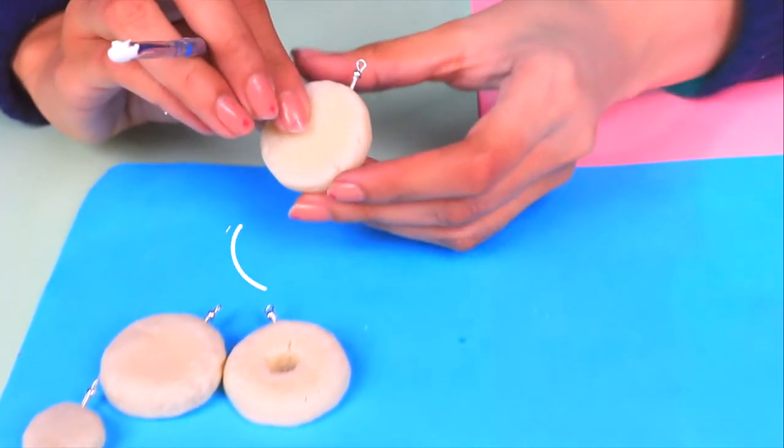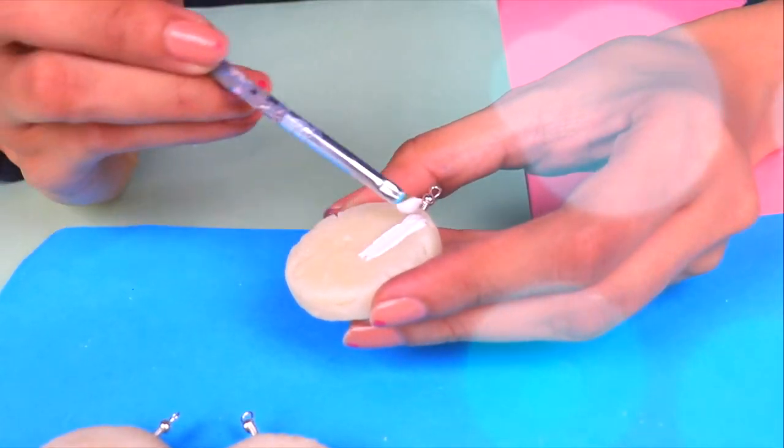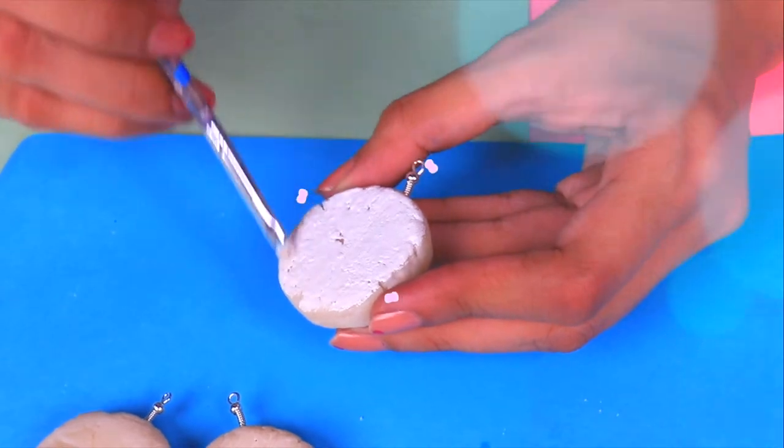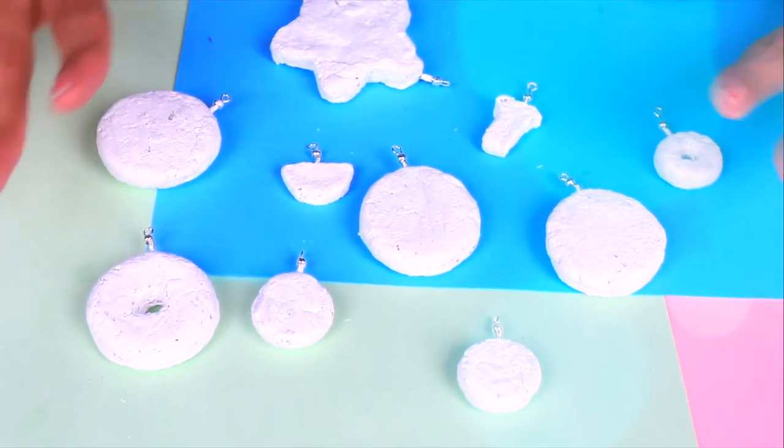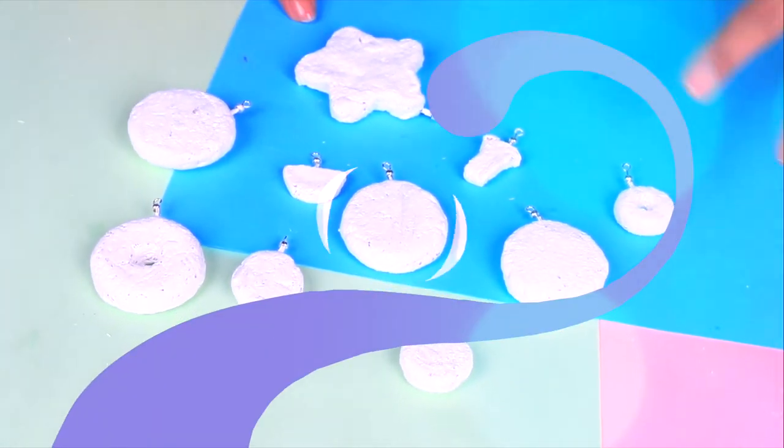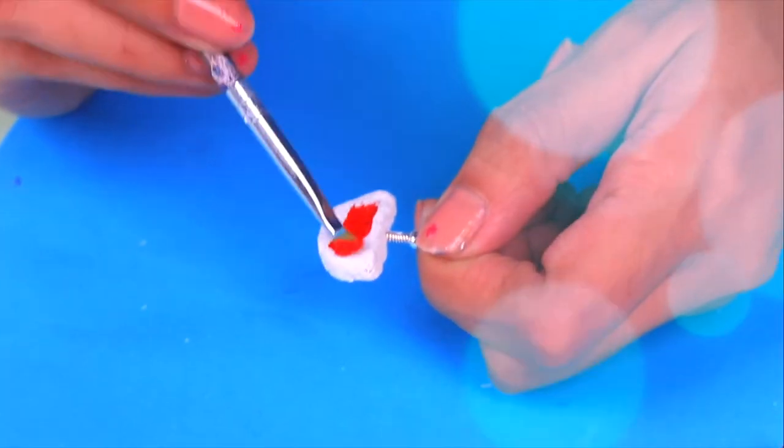So now we will take one and we will apply a layer of white acrylic paint to it. This will work as the foundation for the next color so that they look stronger. This is how they are going to look once painted. They actually looked like before when they were still wet. It's time to decorate them.